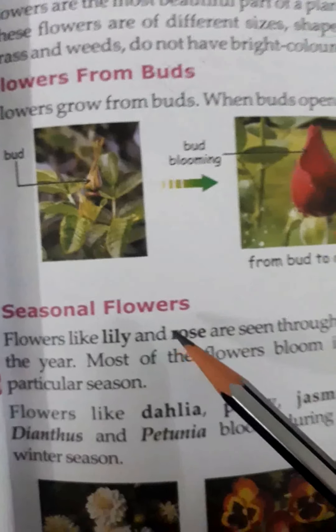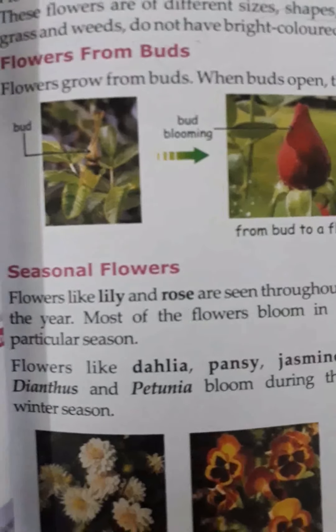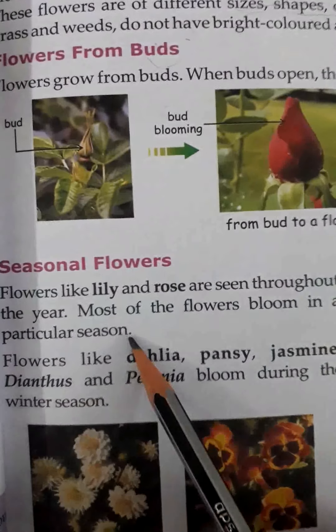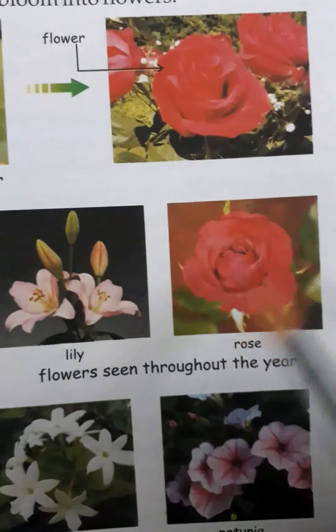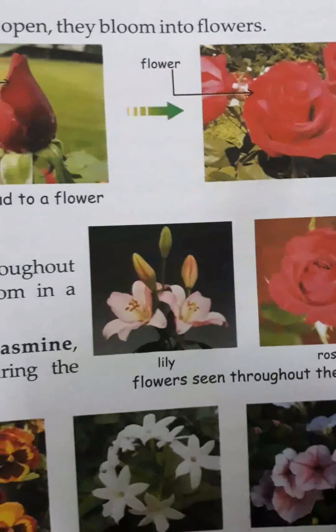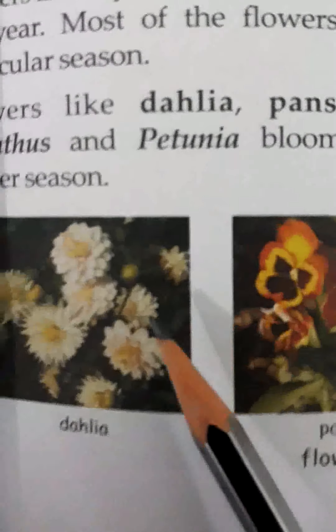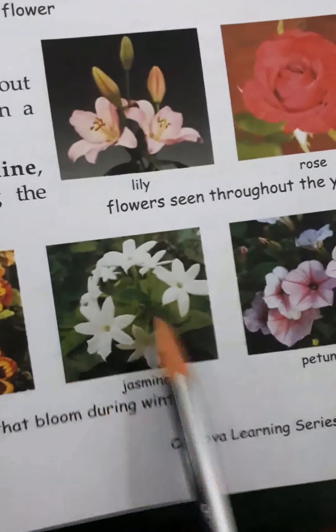Seasonal flowers — if you have heard of seasonal fruits, then there are also seasonal flowers. There are different seasons which bloom in different seasons. Flowers like lily and rose are seen throughout the year, but most flowers bloom in a particular season. Some flowers like dahlia, pansy, jasmine, and petunia are special flowers — dahlia and pansy bloom during the winter season.